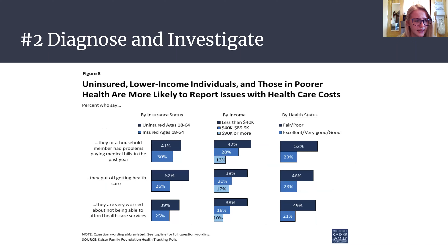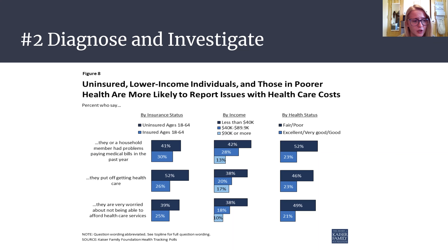In this case, adults aged 18 to 64 who are uninsured, in poor health, and have lower income are those more likely to lack access to health care. For example, they put off going to the doctor because they are worried about the cost of affording health services and/or are currently paying off other medical expenses. These barriers are large factors contributing to their poor health.